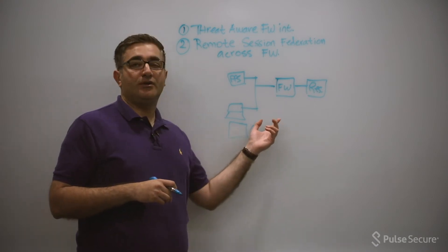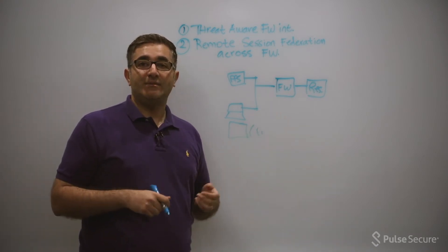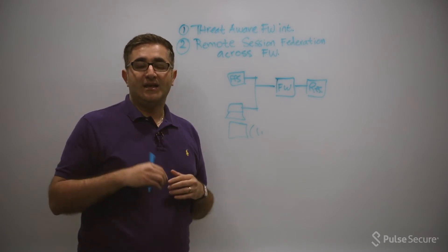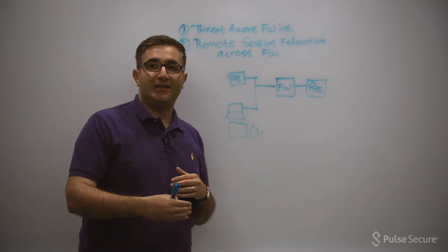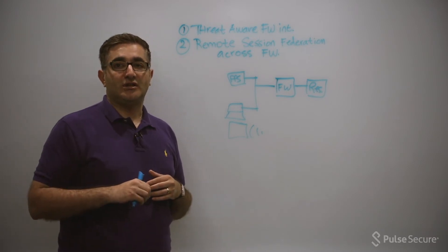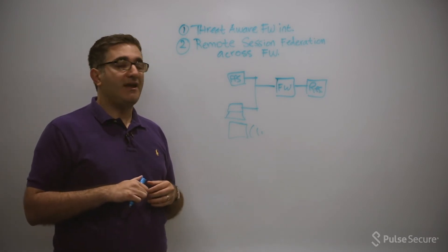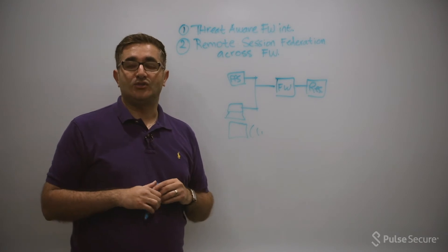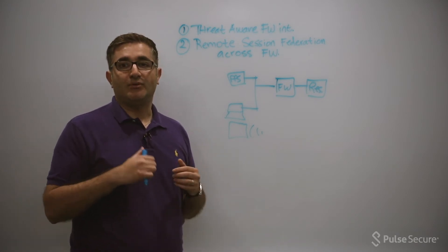So if you trigger this one time, you might want to remediate the device. If you see that the device immediately gets back on the network after remediation and continues to do the anomalous behavior, you can tell PPS to automatically disable this user.